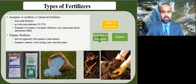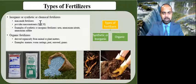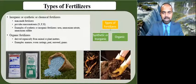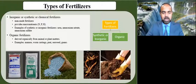Inorganic fertilizers can also be called chemical fertilizers. These are man-made fertilizers that can be formulated for various speeds of release and increase yield in agriculture by providing the macronutrients — nitrogen, potassium, and phosphorus — needed for plant growth. Examples include urea, ammonium nitrate, ammonium sulfate, ammonium phosphate, and ammonium chloride.